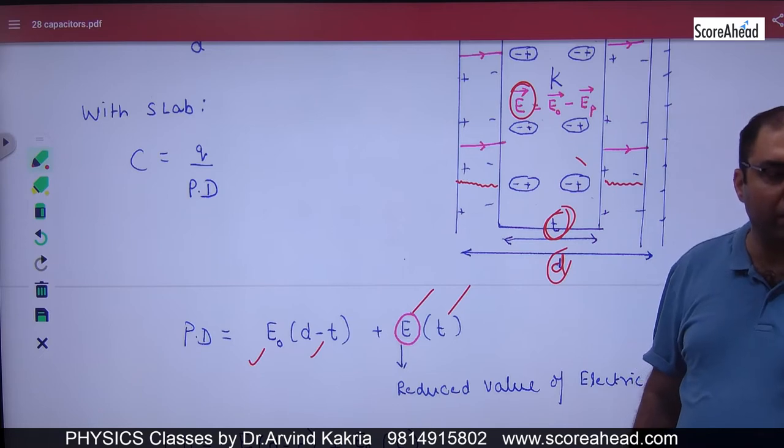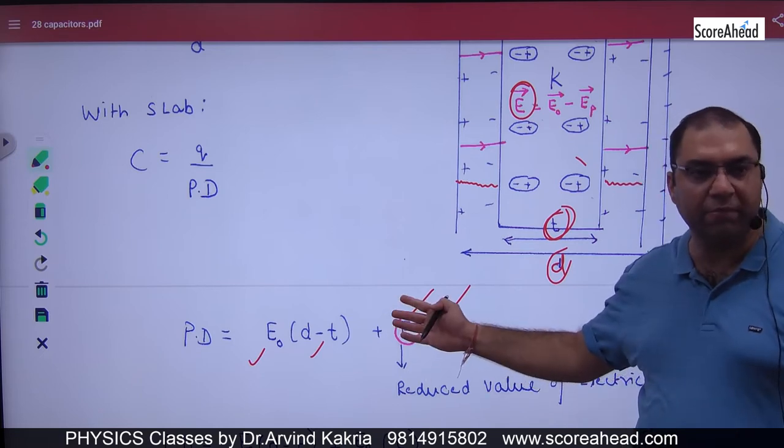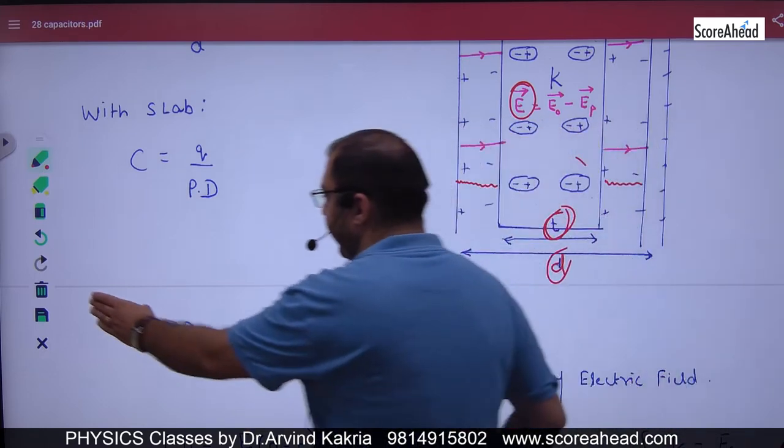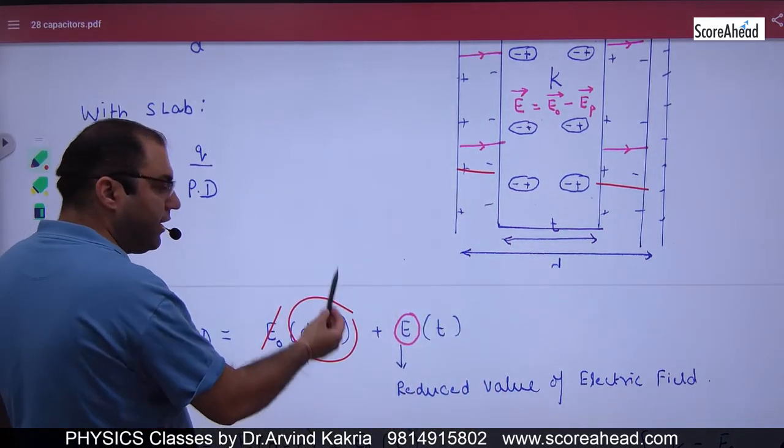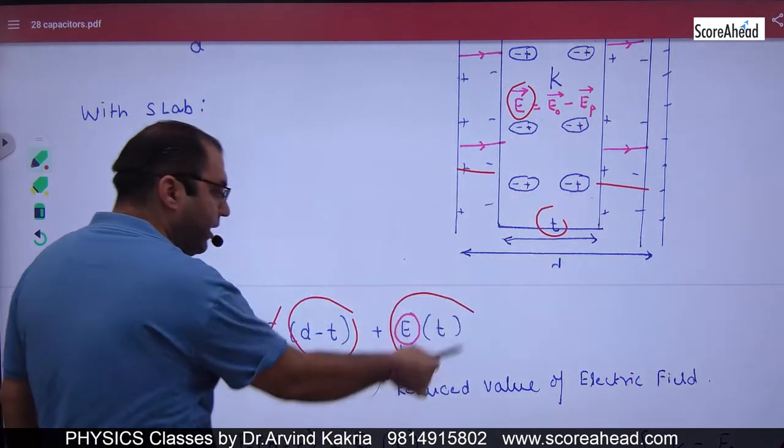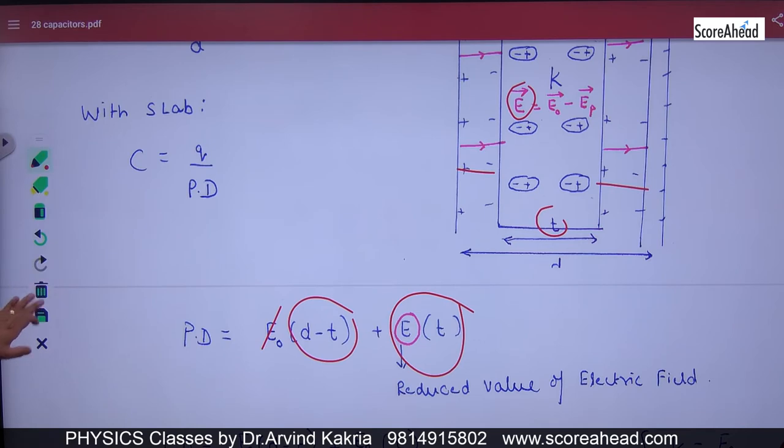In the conducting slab, there was only one difference. This was E0. So this term didn't come. Insulator means this term comes. Electric field in this region is E0, and the distance is D minus T. The electric field here is E, and the distance is T. This is the main step.